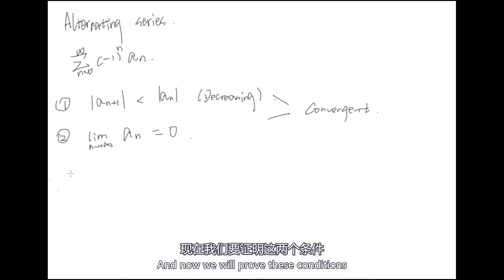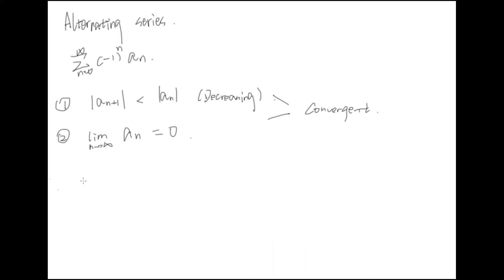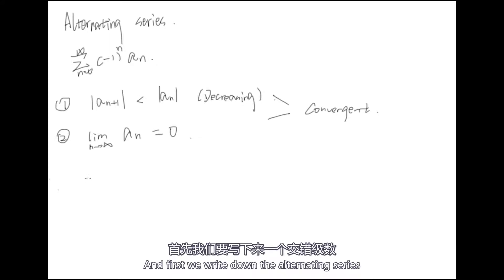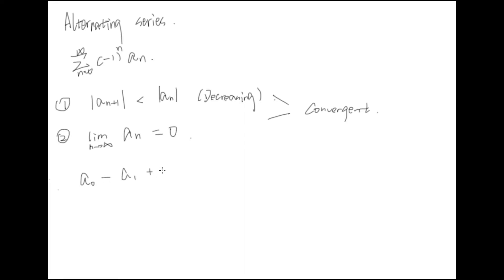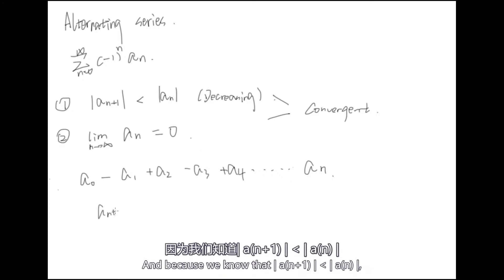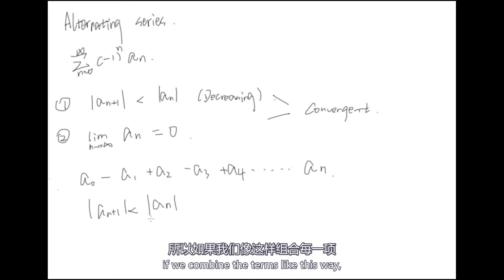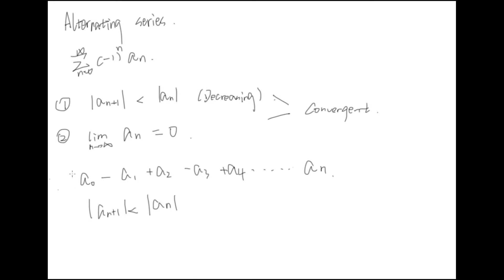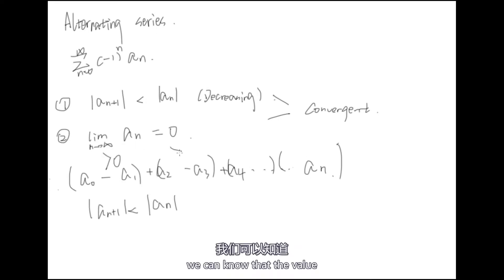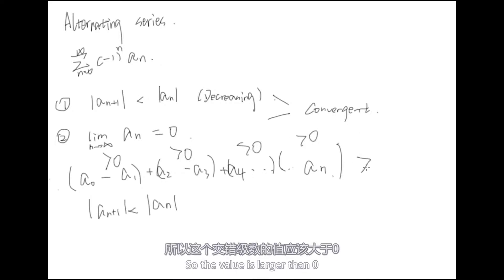Now we will prove these conditions. First, we write down the alternating series. Because we know that the absolute value of a_{n+1} is smaller than the absolute value of a_n, if we combine the terms in this way, we can see that the value of each of those combined terms is larger than 0.